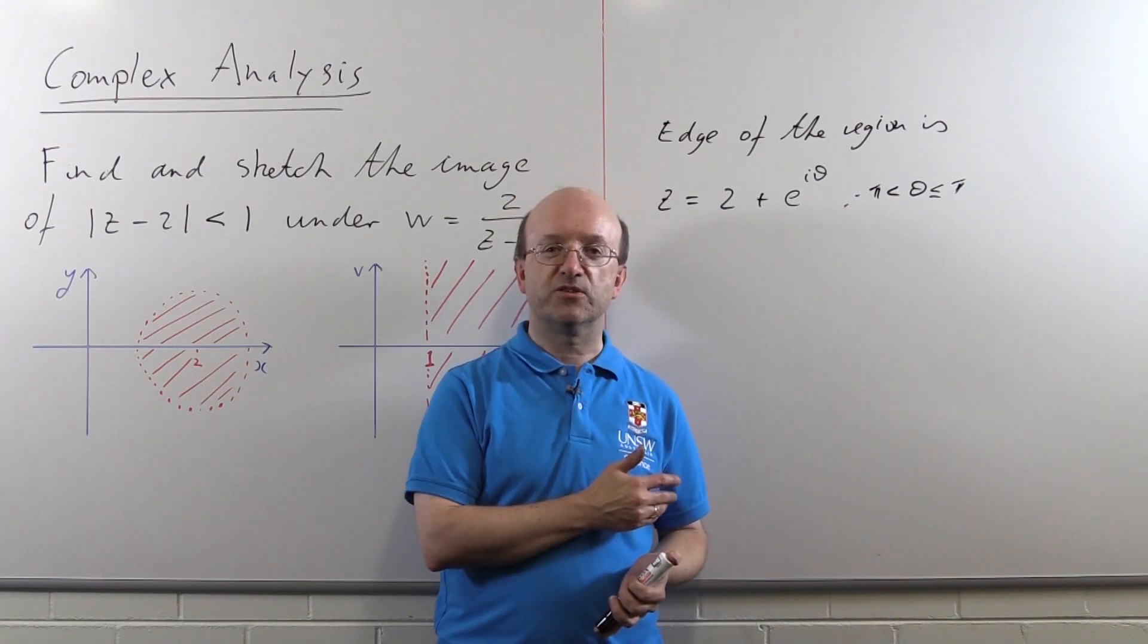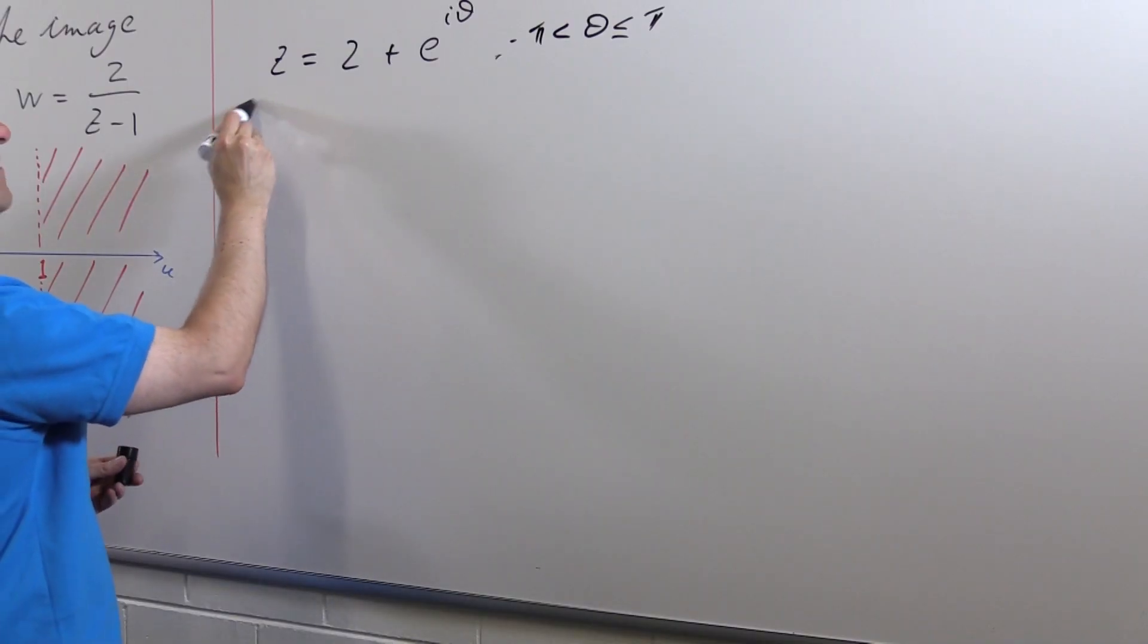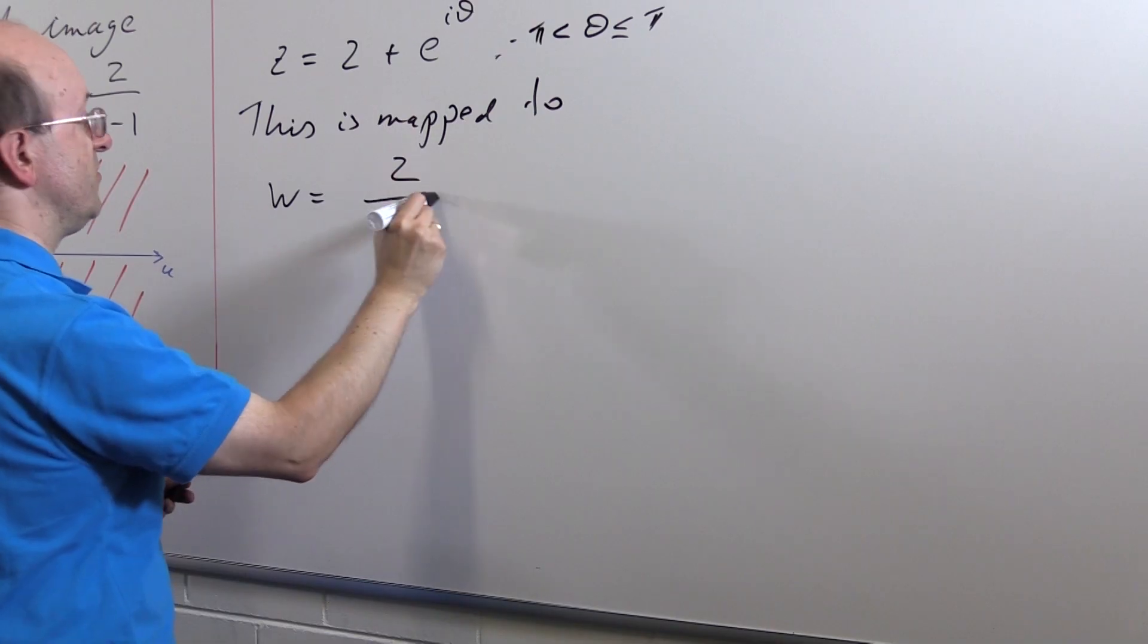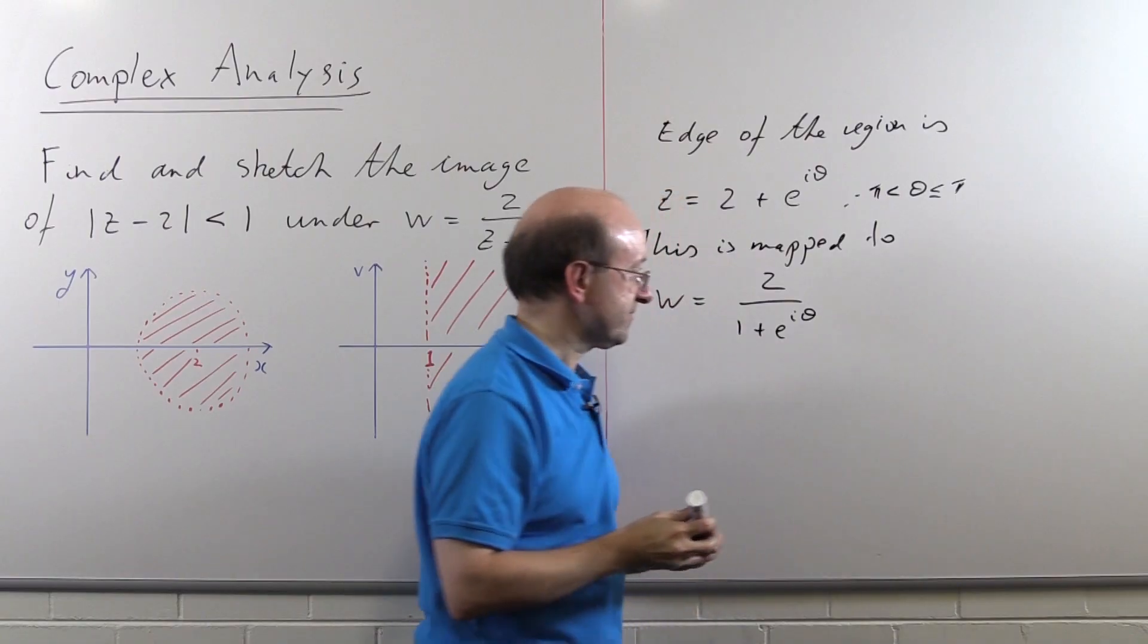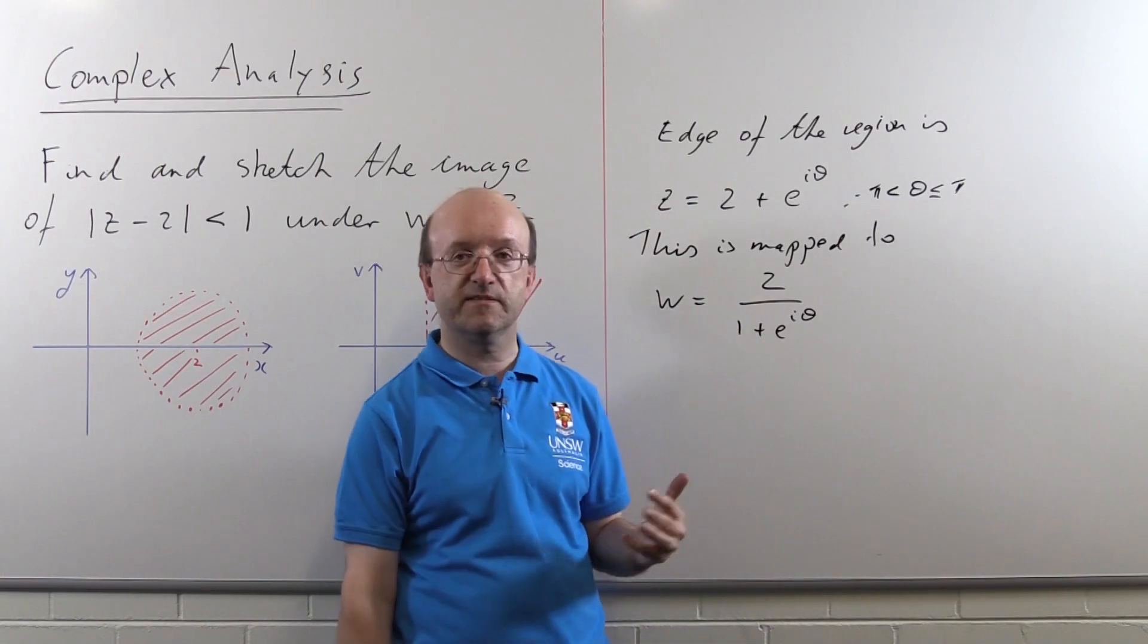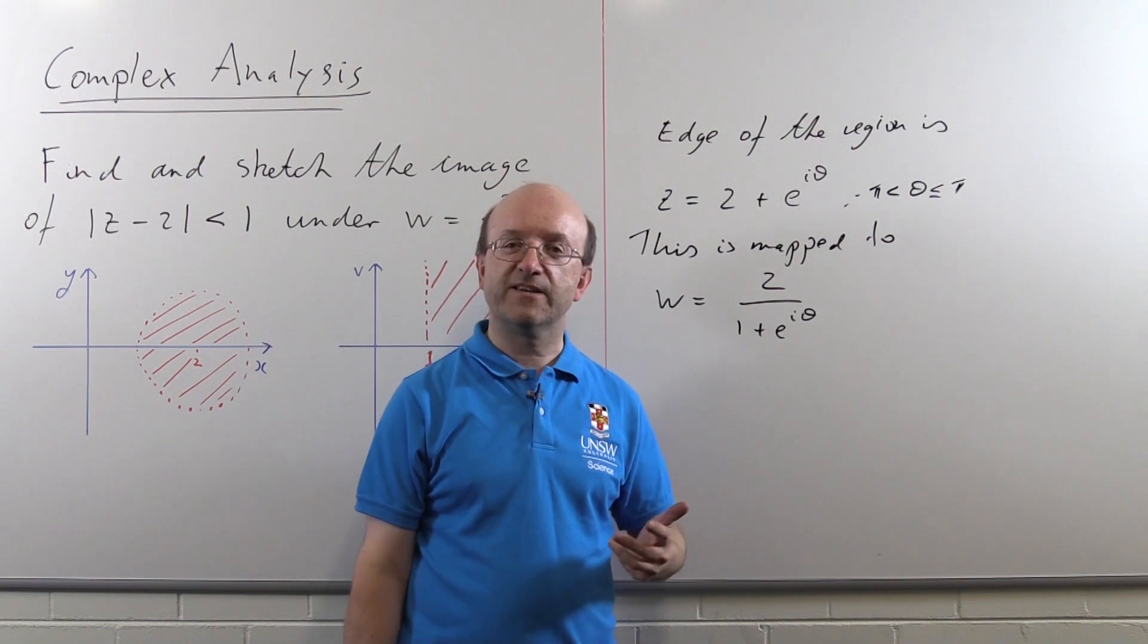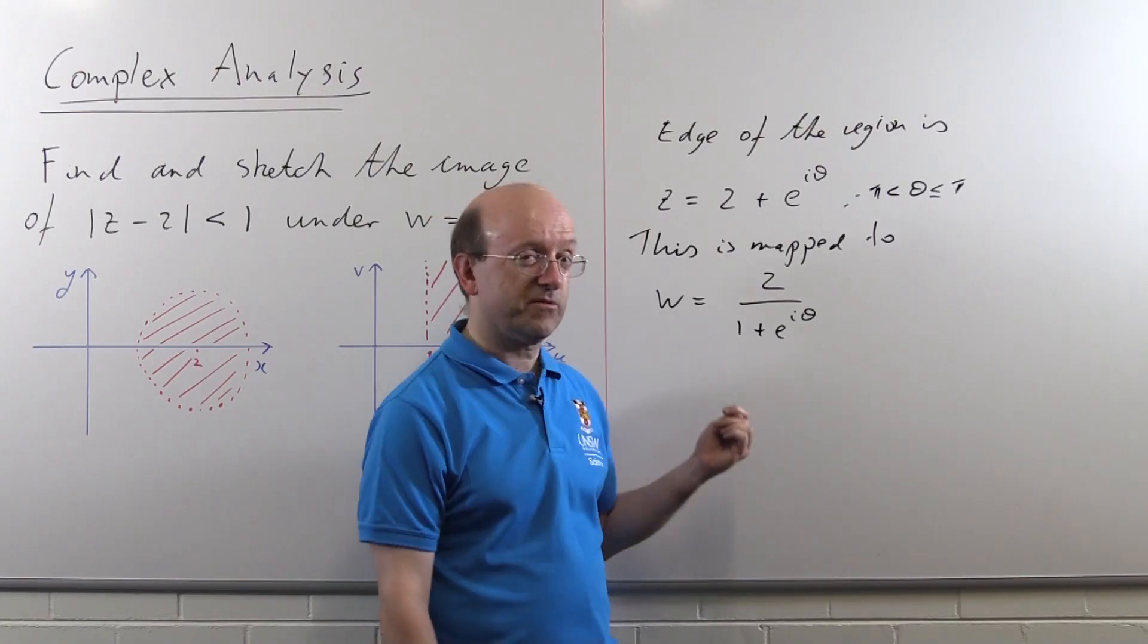Alright, so now what we want to do is to put this parameterisation of the edge of the region into the formula for w. So this is mapped to w is what's going to be 2/(z - 1) = 2/(1 + e^(iθ)). And our problem, then, is to work out exactly what this looks like in the w-plane. What sort of curve is this? Well, the standard way of doing this would be, of course, to make the denominator real by multiplying by the conjugate. And you could do that, but you'll end up with a fair bit of work to do with some trigonometric identities. There's a nice little trick here, but it's quite useful in complex analysis.